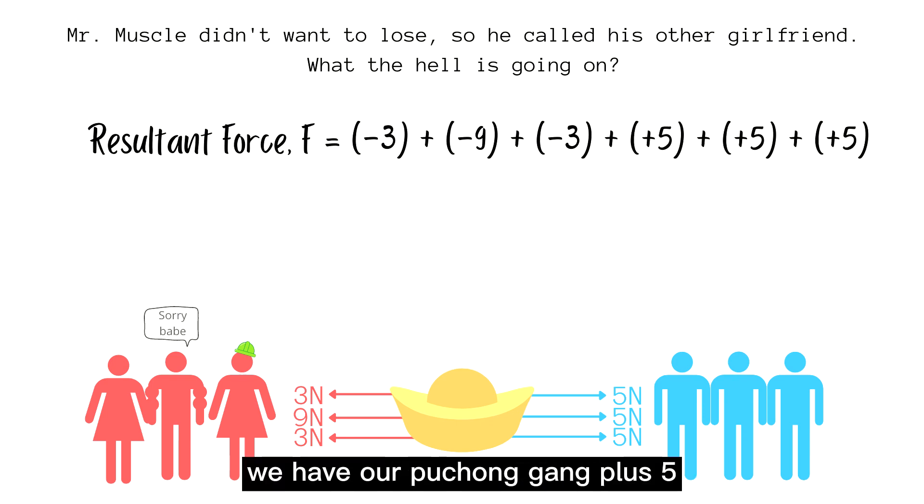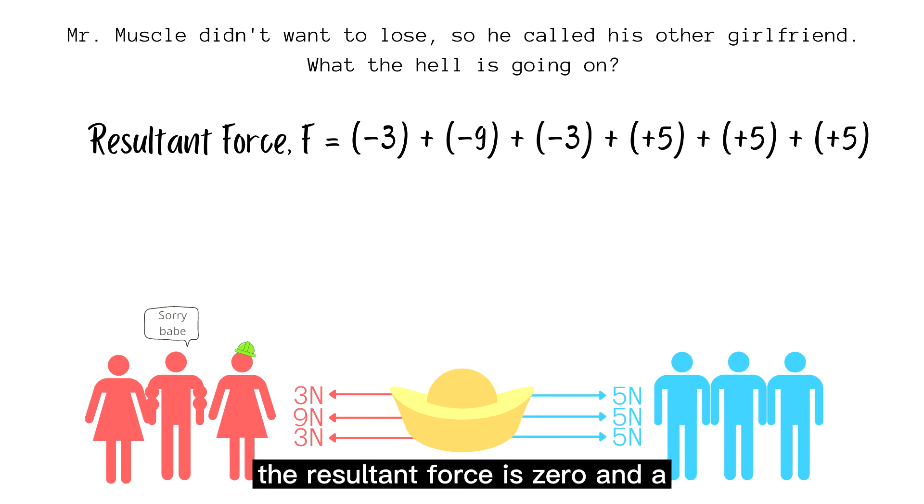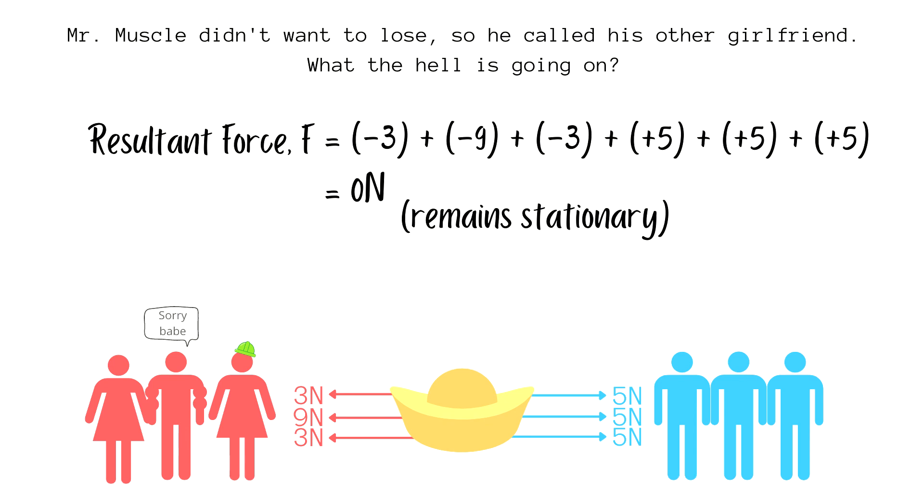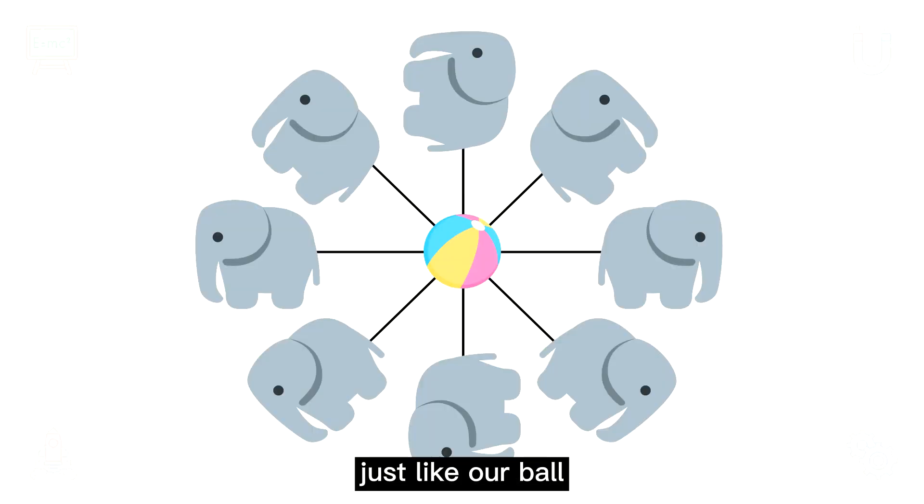When you add all these numbers together, the resultant force is 0. And a 0 Newtons resultant force will mean that the gold will remain stationary, just like our ball.